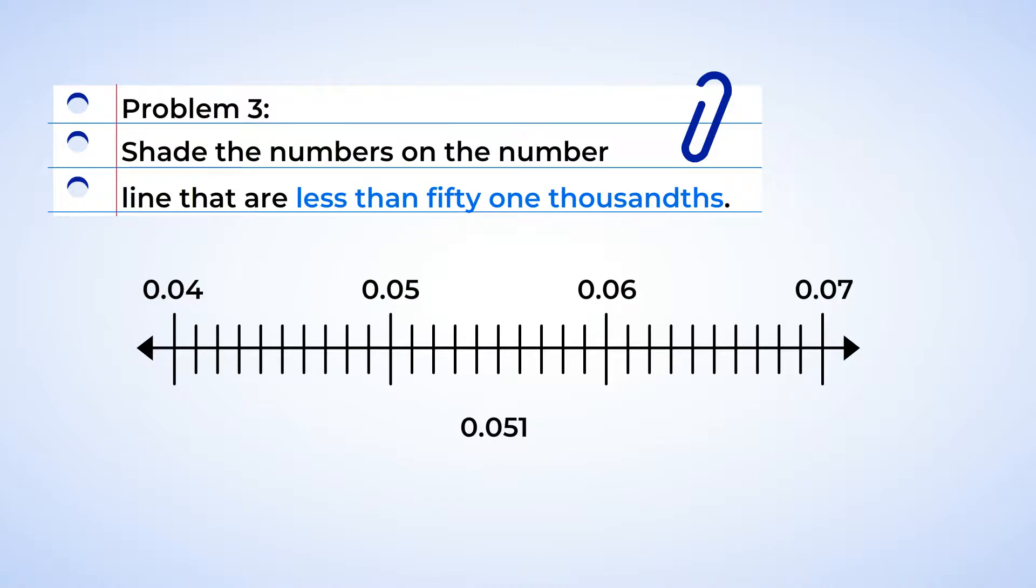So it must be between five hundredths and six hundredths. And we know that because we can add a zero placeholder at the end of the numbers. And five hundredths is the same as fifty-thousandths. Six hundredths is the same as sixty-thousandths. Looking back at the number line in between fifty-thousandths and sixty-thousandths, our number fifty-one thousandths is one tick mark to the right of fifty-thousandths. Perfect.